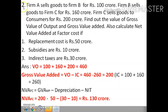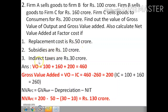Next, the second question. Firm A sells goods to Firm B for ₹100 crore. Firm B sells goods to Firm C for ₹160 crore. Firm C sells goods to consumers for ₹200 crore. Find out the gross value of output and gross value added. Also calculate net value added at factor cost, if replacement cost is ₹50 crore, subsidies are ₹10 crore, and indirect taxes are ₹30 crore.